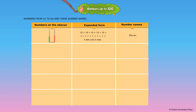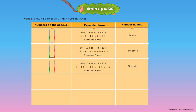5 tens and 6 ones — the number name is written as fifty-six. 5 tens and 7 ones — the number name is written as fifty-seven. 5 tens and 8 ones — the number name is written as fifty-eight. 5 tens and 9 ones — the number name is written as fifty-nine.